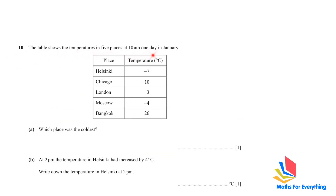Question 10: a table shows the temperatures in 5 places at 10 a.m. one day in January. Which place was the coldest? The coldest will have the lowest temperature. The lowest is −10, so the coldest place is Chicago. Be careful — many students write the temperature instead of the place name. At 2 p.m. the temperature in Helsinki had increased by 4 degrees; since it was −7, adding 4 gives 3°C.